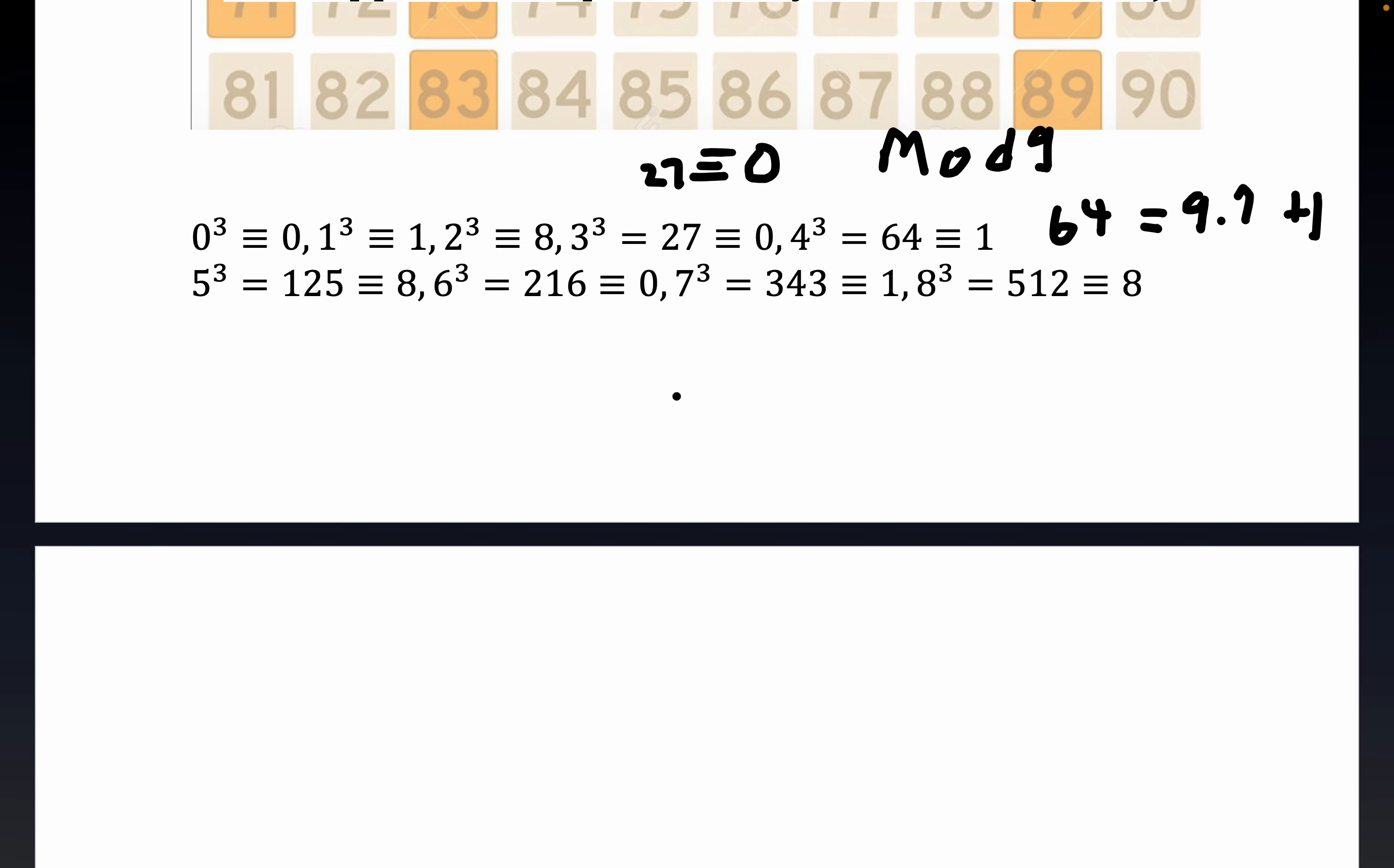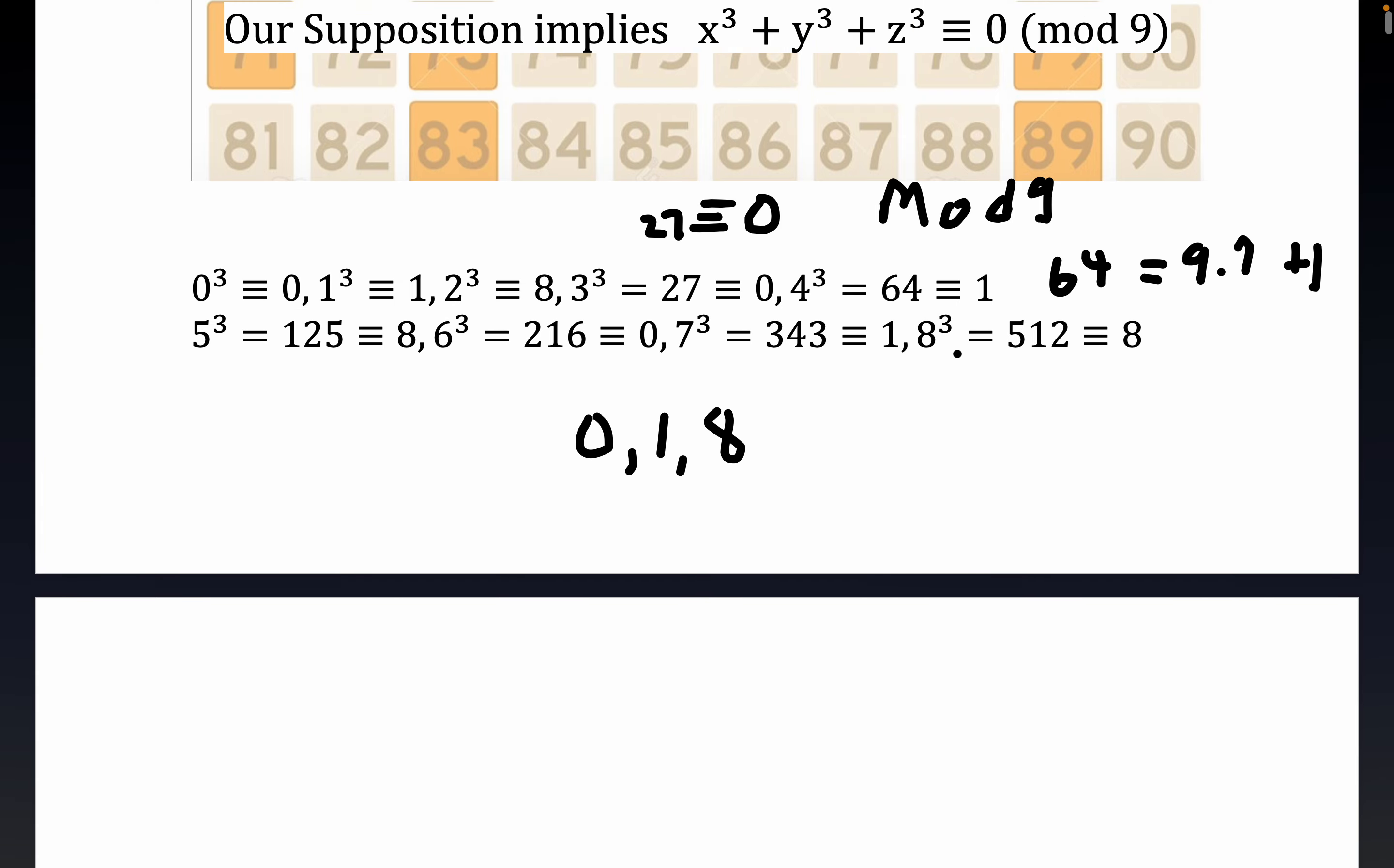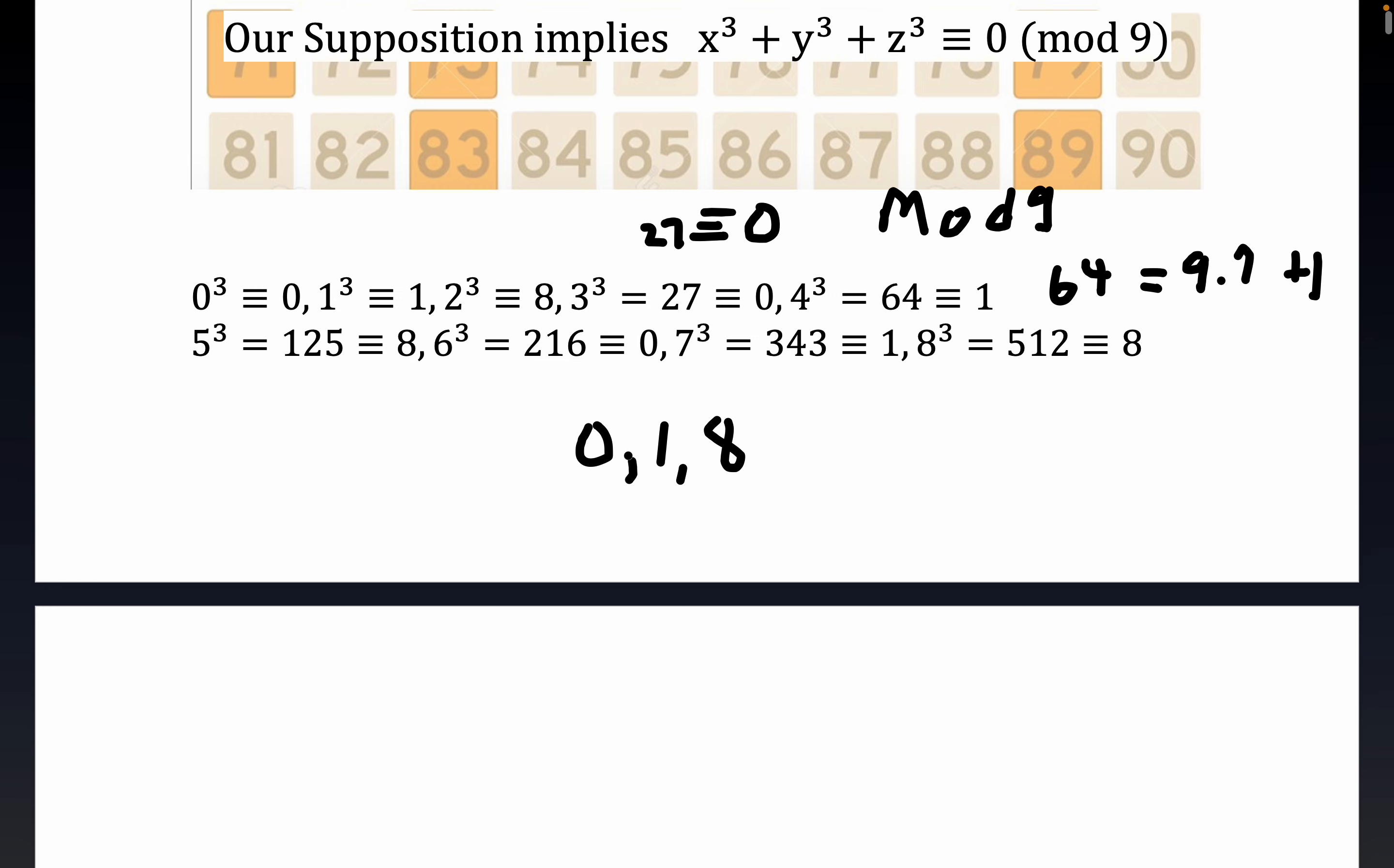And what we get is that we have the only possible remainders are 0, 1, and 8. Now that's kind of a useful fact here. Notice we only get 0—you see, you've got 1 here, you have 8, 0, 1. Here's another appearance of 8, 0, 1, and then 8 again. You see, so when you divide by 9, you always get remainders of either 0, 1, or 8.